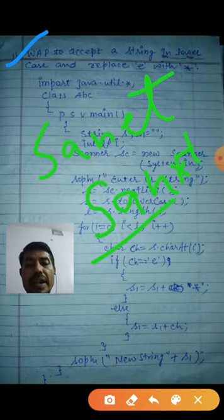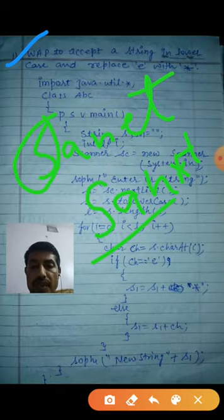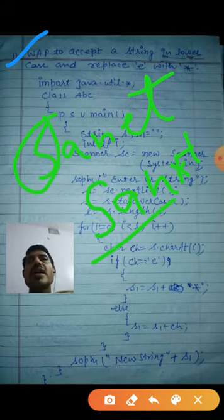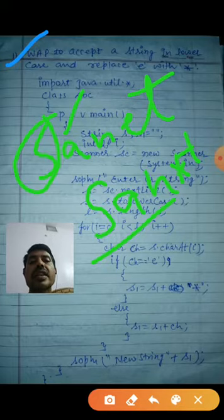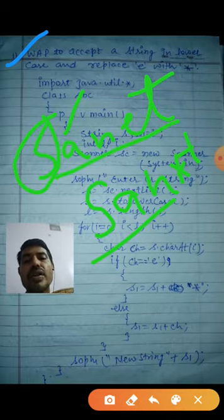My dear, in this one, one character you will extract. First you will extract s. Now you will check: s is equals to e or not. Suppose e, then place of s you will put star. Next one is a. Extract a and check is it equals to e or not. If equals to e then you will replace with the star. Same thing, each character you will check here. How can you do this one?